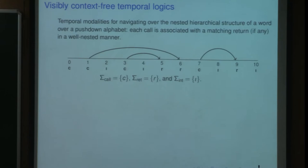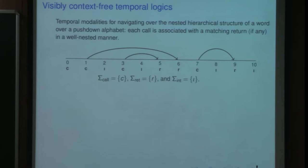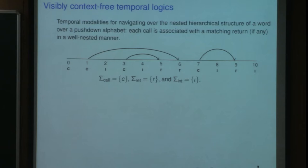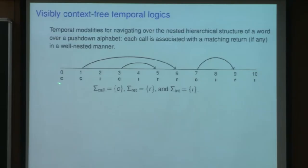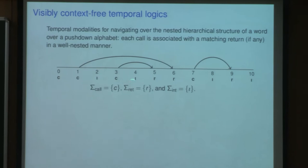I want to give you the flavor of these formalisms, in particular the temporal logics which have been used to formalize relevant properties of these systems. In particular, in these logics you have temporal modalities that allow you to navigate in the nested-like structure of a word over these push-down alphabets. You have essentially three kinds of operations: the call C, the return R, and the internal operation. And the idea is that each call is associated with the matching return, if any.